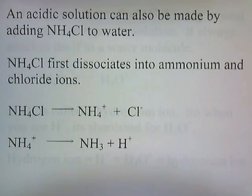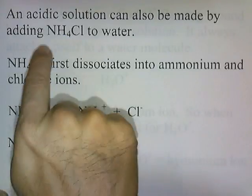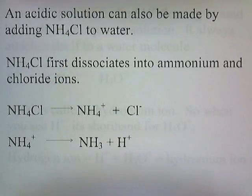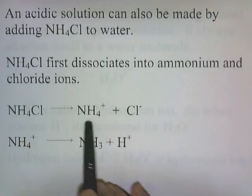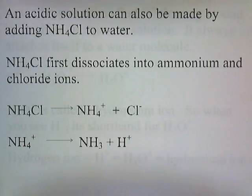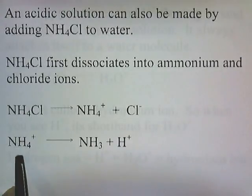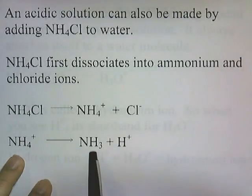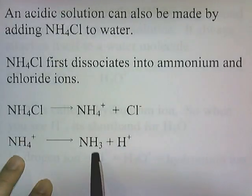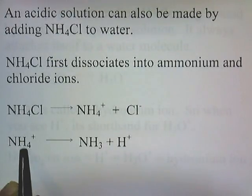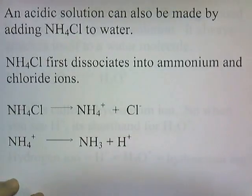An acidic solution can also be made by adding NH4Cl, ammonium chloride, to water. Ammonium chloride first dissociates into ammonium and chloride ions. Then the NH4 donates an H+, which separates off and leaves behind NH3. The presence of the H+ makes it an acidic substance.